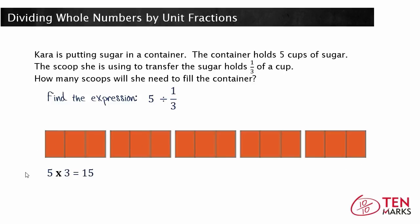And that makes sense because five times three equals fifteen. So five divided by one-third is equivalent to five times three, since they both give you the answer fifteen.